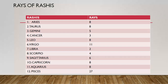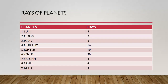So what is the fundamental for this base? First, we have to remember two things: the rays of the rashies and the rays of the planets. There are twelve rashies — Aries has 8, Taurus has 8, Gemini has 5, Cancer has 3, and so on. Similarly, planets also have rays: Sun is 5, Moon is 21, Mars is 8, Mercury is 16, and up to Ketu we have four rays distributed.